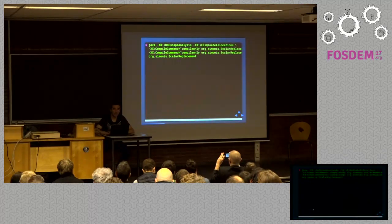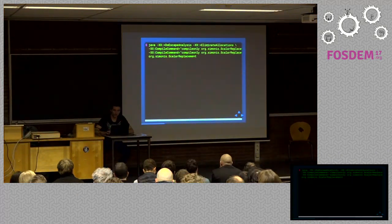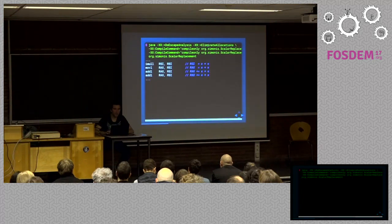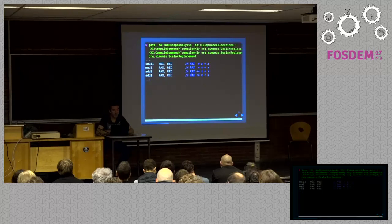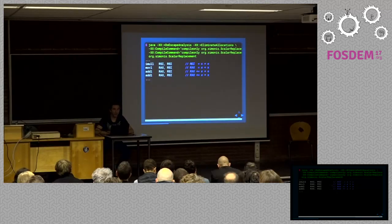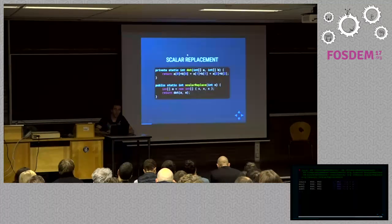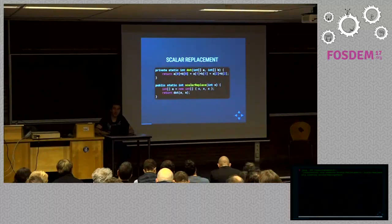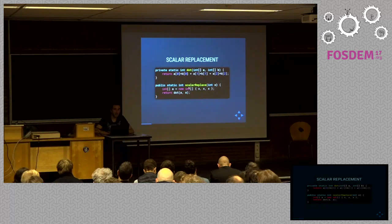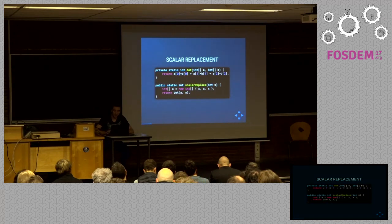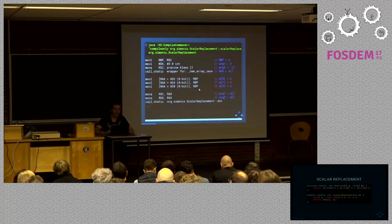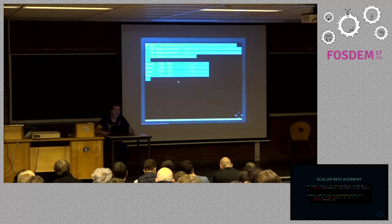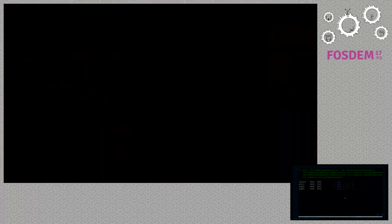Now if we enable escape analysis and eliminate allocations — which are actually enabled by default — the resulting code looks much better. It's just the computations; there is no more allocation and no more calls. Escape analysis detected that our array is not escaping the scalar_replace function. We just need it locally to compute the dot product and return only the result. So the array isn't really needed — all we need are the array values. The C2 compiler detects this via escape analysis, eliminates the allocation, and we're left with just the computation.